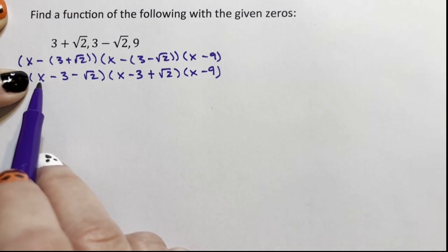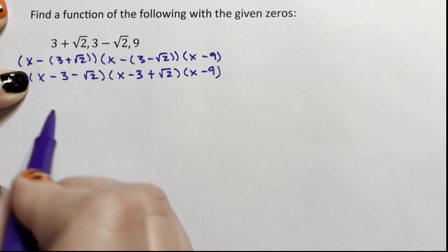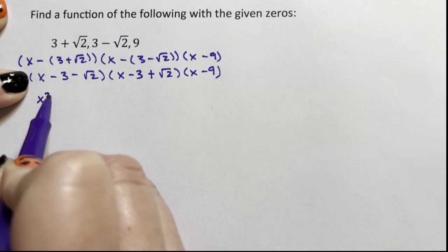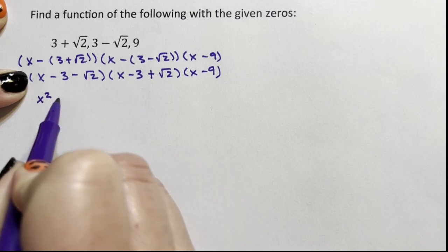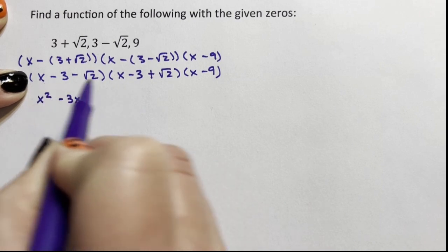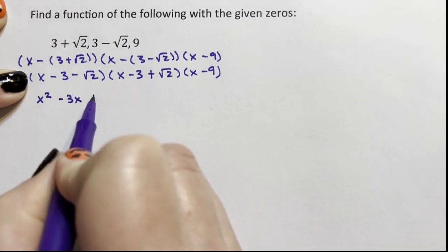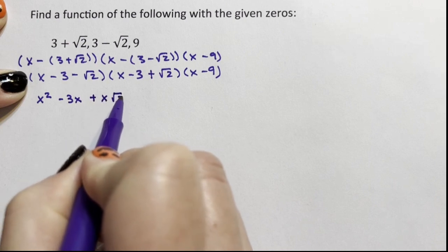So this x is going to distribute in. x times x is x squared. x times negative 3 is negative 3x. x times the square root of 2 is plus x root 2.